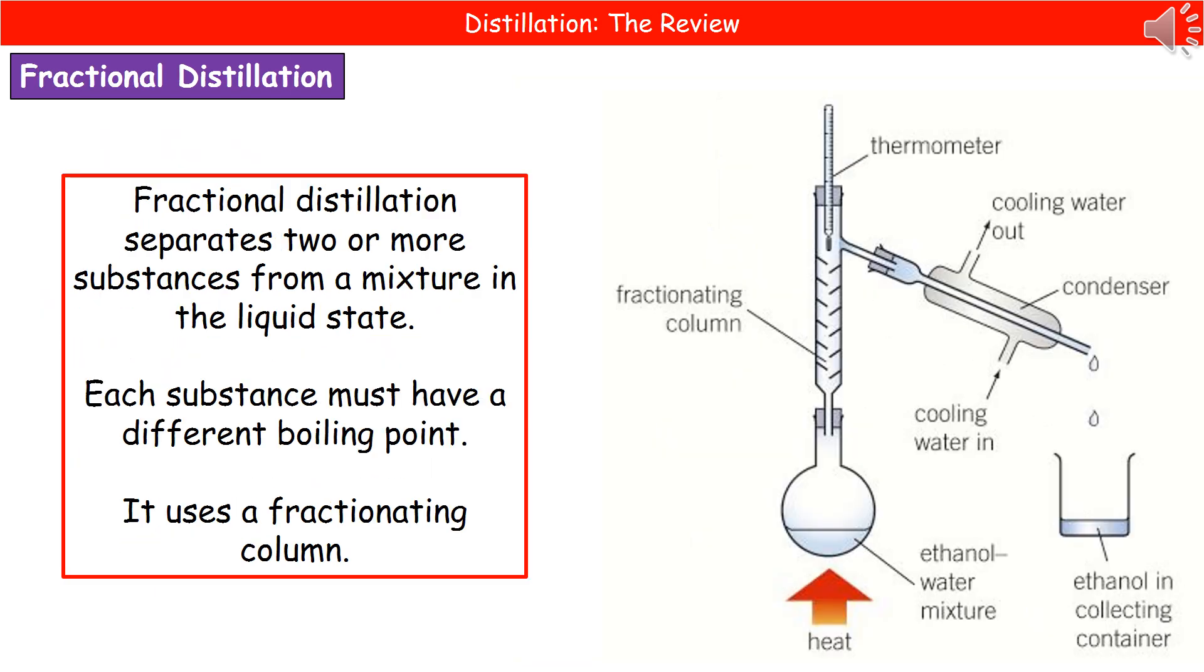The second type of distillation we need to know about is one called fractional distillation. Your equipment setup is again in that diagram on the right there. And the key bit of equipment that we have here is something called a fractionating column, and that's the bit that you can see sticking out the top of the round bottom flask.